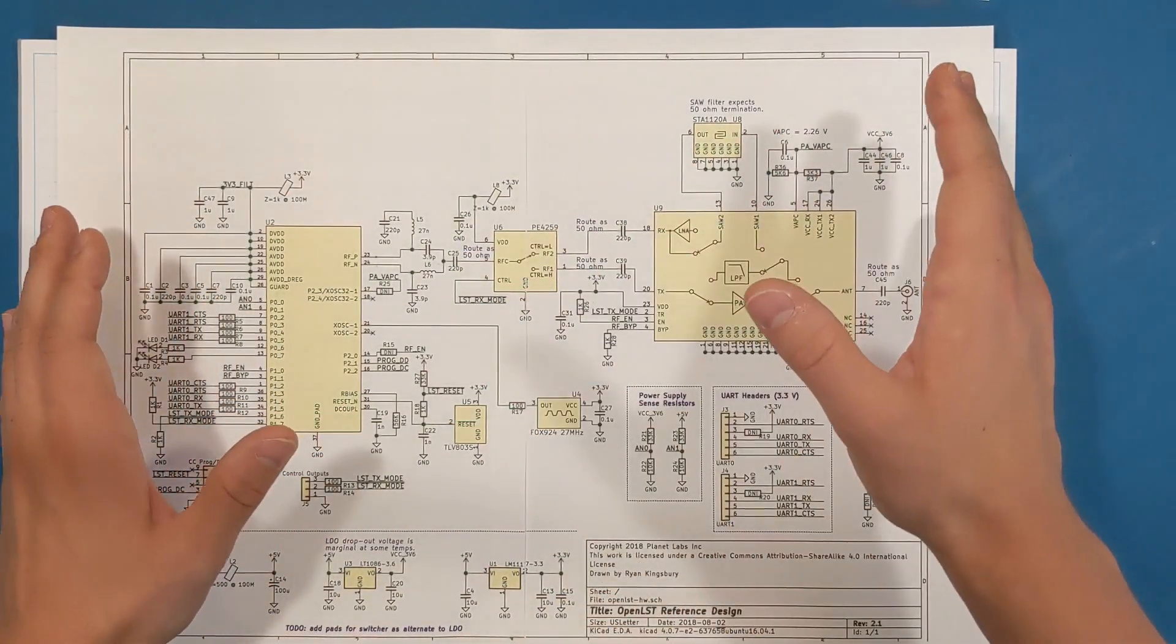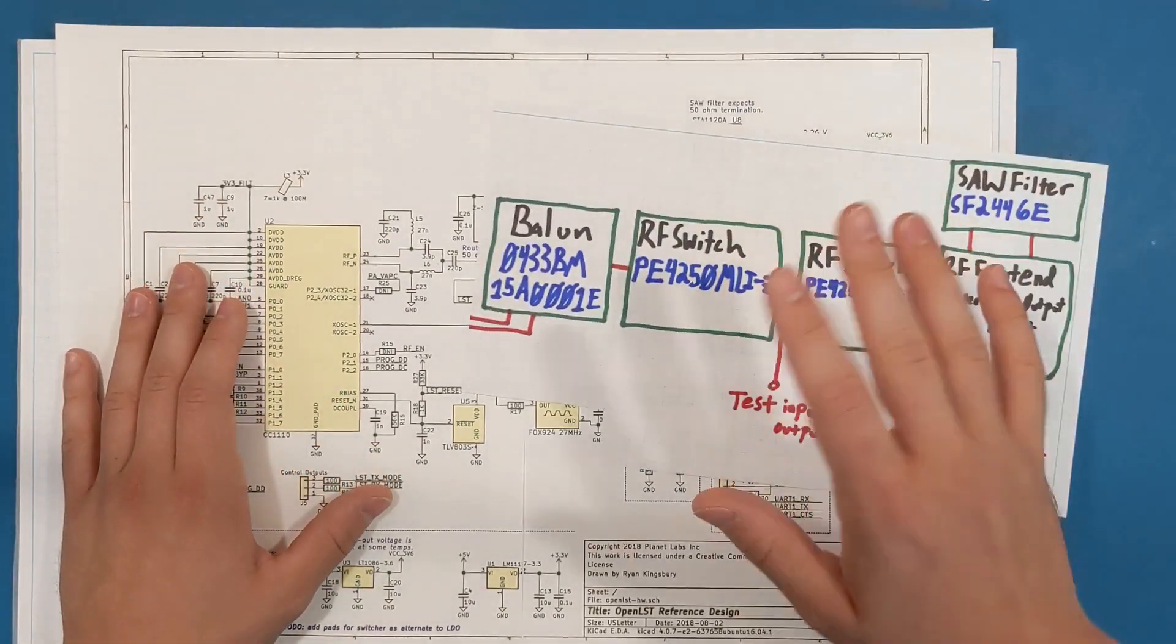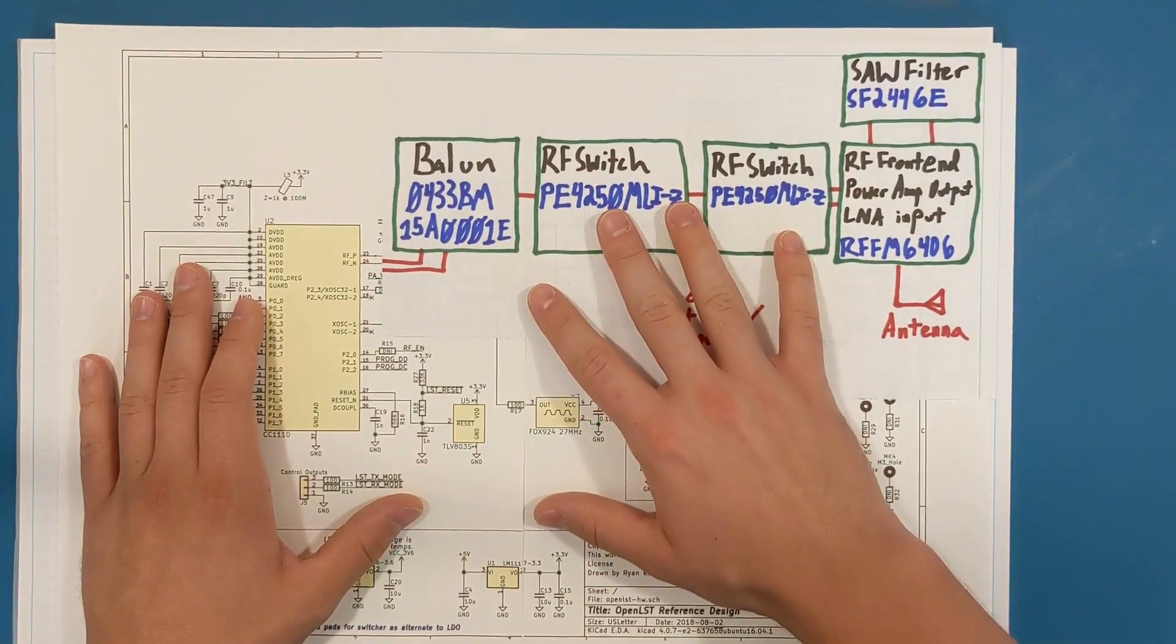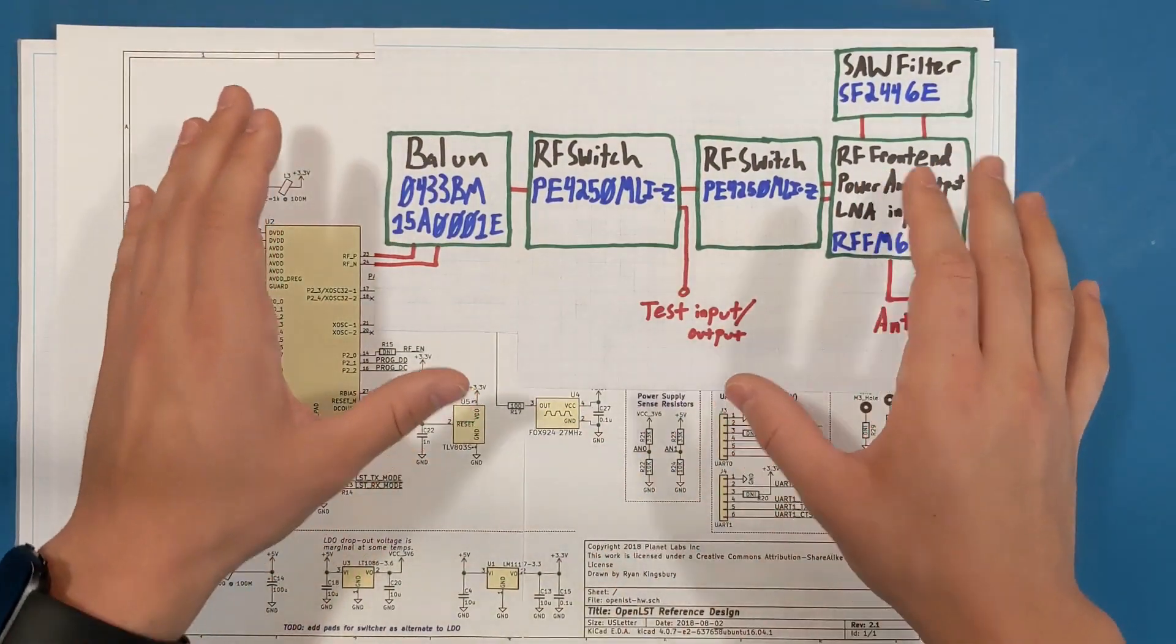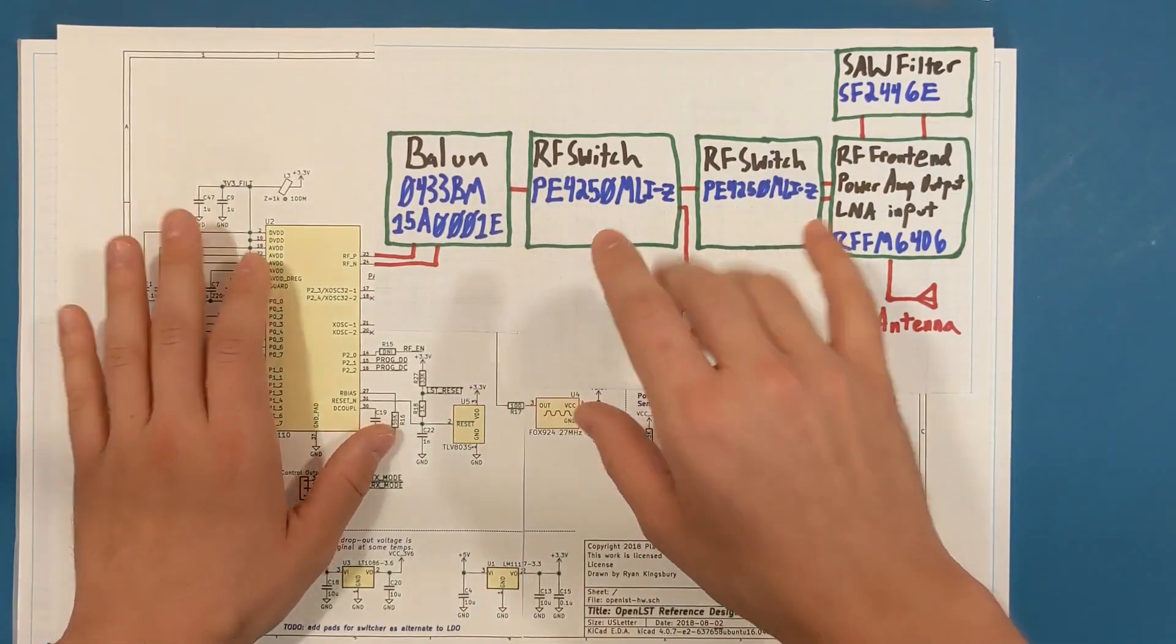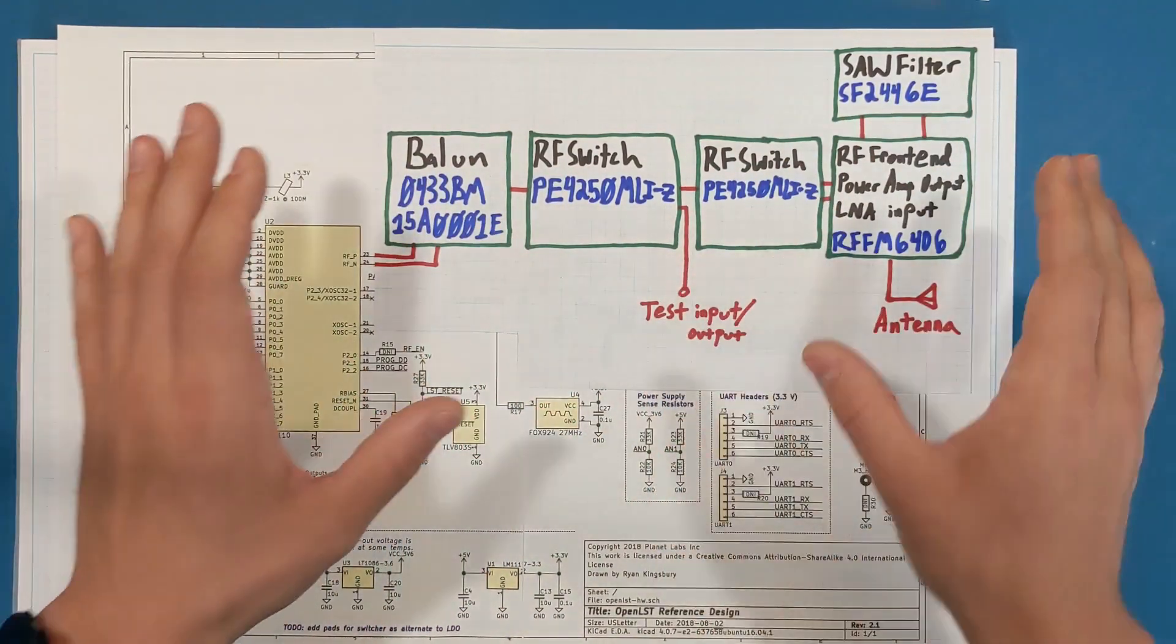So what I've done is come up with my own block diagram of essentially equivalent parts that I hope do pretty much the same thing. The only major difference that I have in my block diagram is that there are two RF switches, which I'll get to in a second. So let's talk about each of the parts.